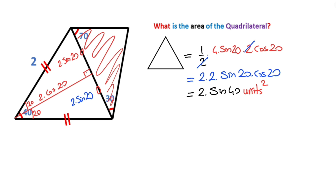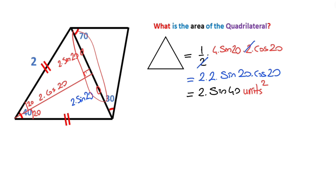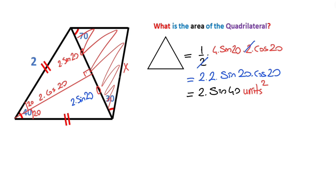If we focus on the second triangle, once we get its value we can get the full quadrilateral area. Notice that we know the value of this side and this angle. If we can calculate x, we can calculate that triangle's area. Therefore, applying the sine rule gives us the value of x.